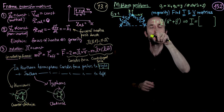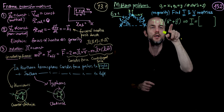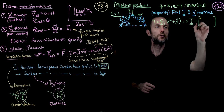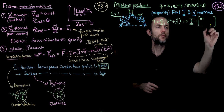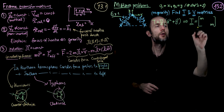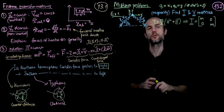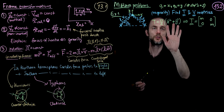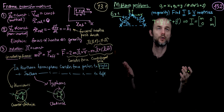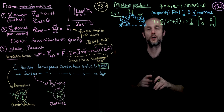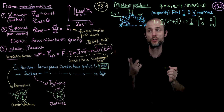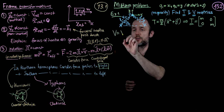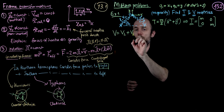From the kinetic energy we can immediately write down the T matrix. Taking d²T/d(x-dot)² gives us the mass m; the same for y, and we get zeros for the off-diagonal terms because there are no cross terms — no x-dot times y-dot term.